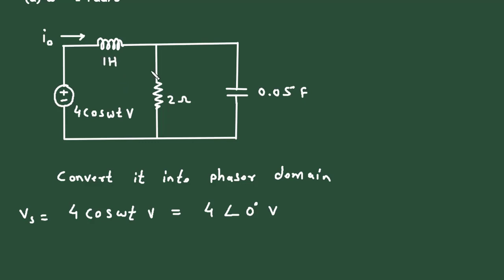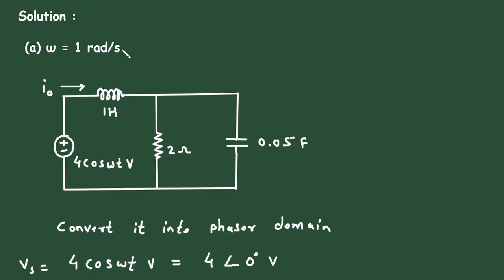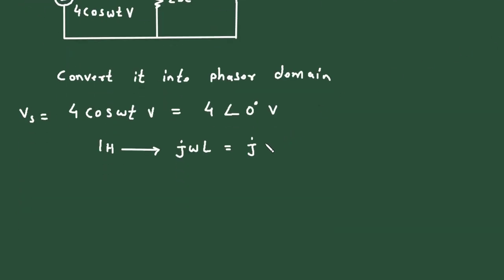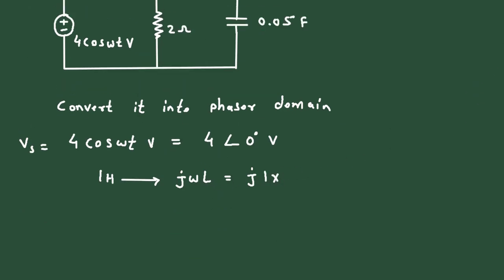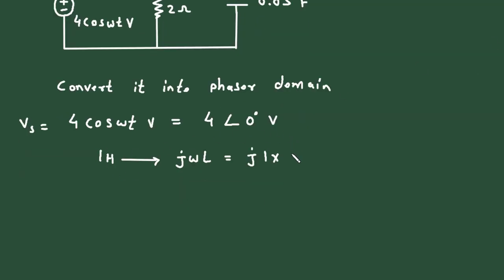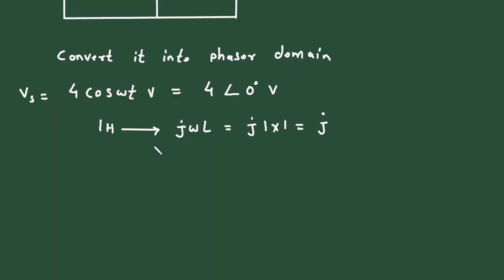The 1 henry inductor implies jωL. With omega equal to 1 radian per second and L equal to 1 henry, this gives j×1×1, so the impedance is simply j ohm. The 2 ohm resistor remains 2 ohm.